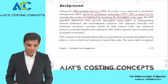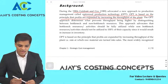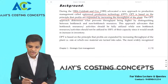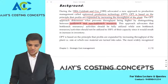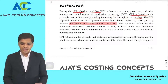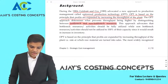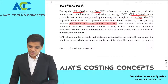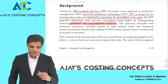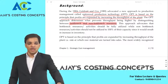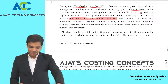Theory of constraint — Goldratt and Cox, 1980. The important word to understand: Optimized Production Technology. The optimized approach determines what prevents throughput from being higher by distinguishing between bottleneck and non-bottleneck resources. This approach advocates that bottleneck resource activity should be fully utilized, while non-bottleneck activity should not be utilized to 100% of capacity, since it would result in increased inventory.